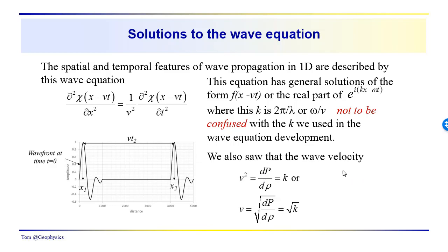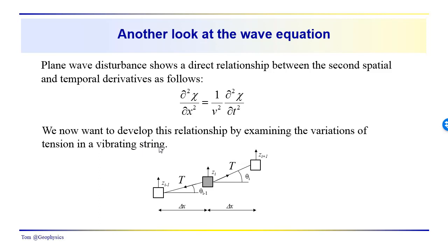This is our wave equation, and what we're going to do this time is develop it again, but from the standpoint of little segments of differential mass associated with a vibrating string — imagine this as part of a guitar string, a piano string, or whatever your favorite stringed instrument is. We're looking at the vibrations in the z direction, with differential movement of these differential masses as we move differential intervals along the length of the string, delta x.